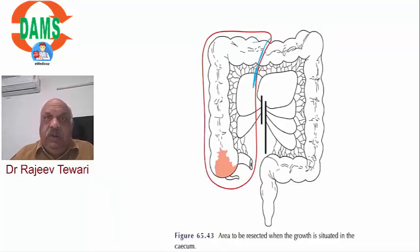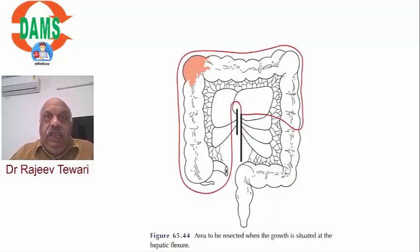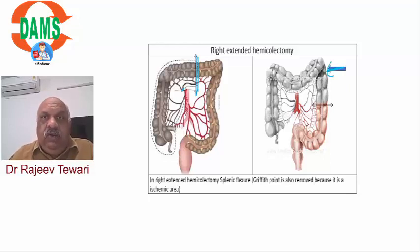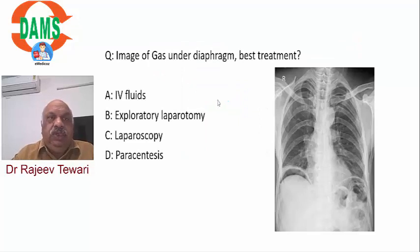In summary: for right hemicolectomy (cancer in cecum and right-sided colon), we go to the right branch of the middle colic. For left hemicolectomy, we go to the left branch. For right extended, we cut the main trunk of the middle colic and remove the splenic flexure as well, since it is an ischemic area. This concludes question one.